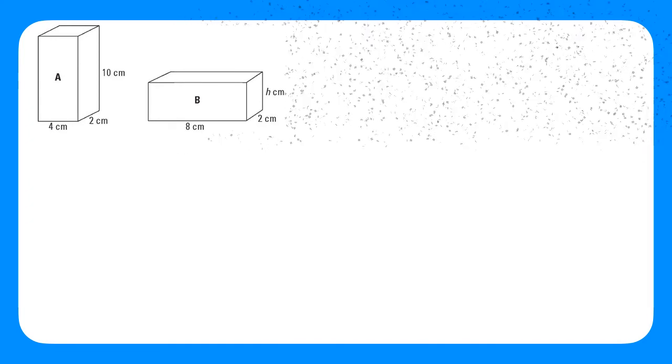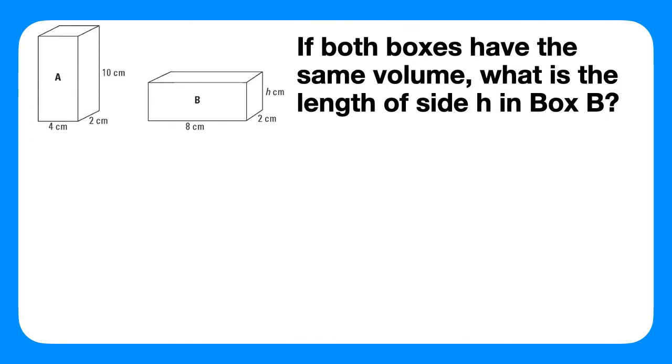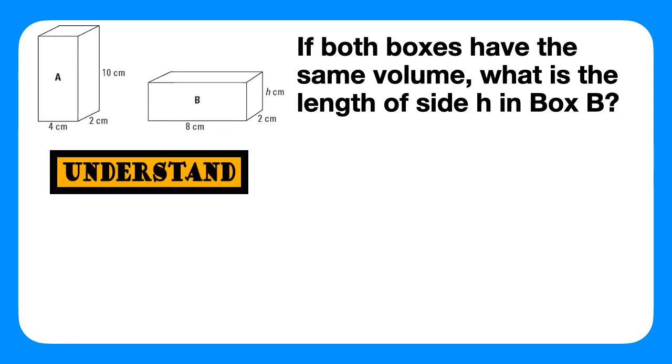If both boxes have the same volume, what is the length of side H in box B? First, we must understand the problem. In understanding, we circle what we know. We know that there are two boxes and box B has an unknown side, side H.